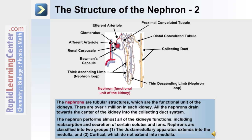The nephrons are tubular structures and are the functional unit of the kidneys. There are over 1 million nephrons in each kidney. They all drain towards the center of the kidney into the collecting duct system.